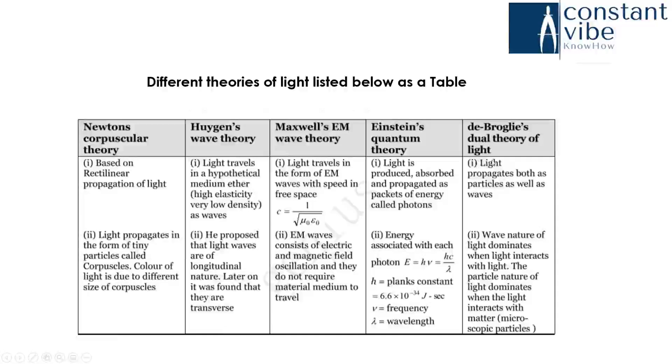De Broglie's dual theory of light. Here, he explains light propagates both as particles as well as waves. The wave nature of light dominates when light interacts with light. The particle nature of light dominates when the light interacts with matter. These are the different theories of light.